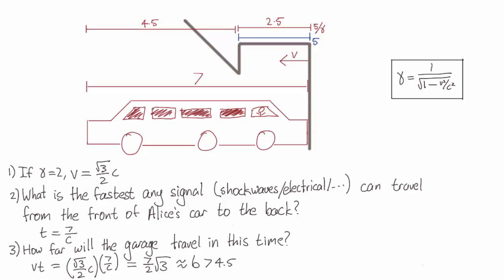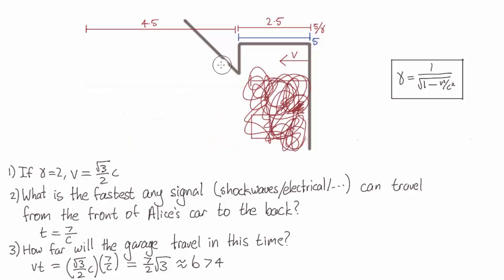So what this means is the entirety of Alice's car will end up squashed up inside the garage, at which point Bob will shut the door. So in both Alice's reference frame and in Bob's reference frame, they both agree that the limo ends up as a nice little cube inside a shut garage.